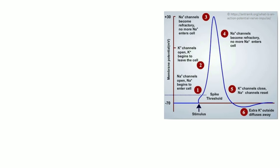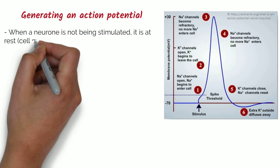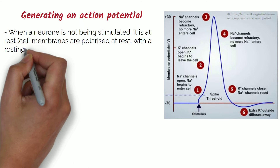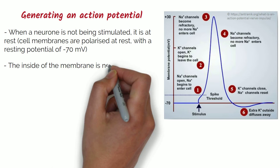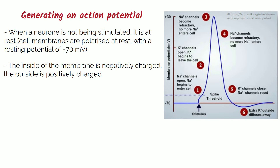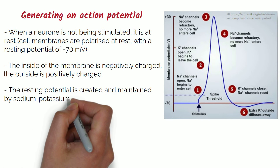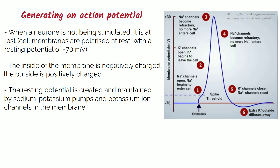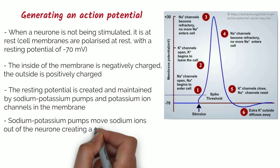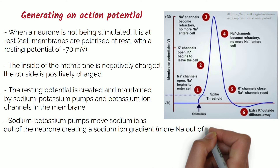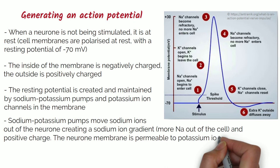So how is an action potential generated? When a neuron is not being stimulated, it is at rest. Neuronal cell membranes are polarised at rest, and the resting potential is minus 70 millivolts. The inside of the membrane is negatively charged and the outside is positively charged. This resting potential is created and maintained by sodium-potassium pumps and potassium ion channels in the membrane. Sodium-potassium pumps move sodium ions out of the neuron, creating a sodium ion gradient with more sodium outside the cell, giving the positive charge. The neuron membrane is permeable to potassium ions, which can diffuse in and out.